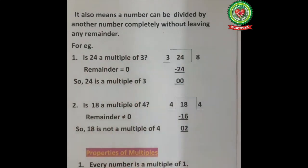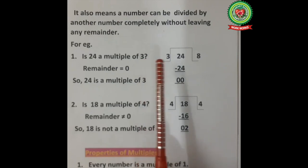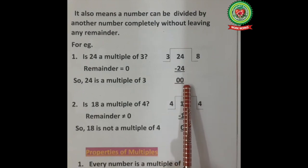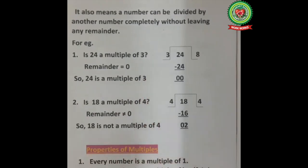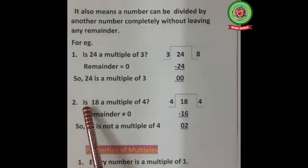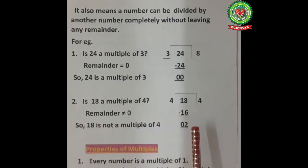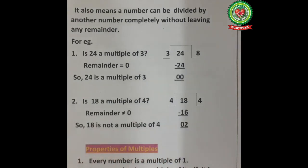It also means a number can be divided by another number completely without leaving any remainder — the remainder should be 0. For example, is 24 a multiple of 3? We divide: 3 eights are 24, remainder is 0, so 24 is a multiple of 3. Is 18 a multiple of 4? 4 fours are 16, remainder 2, remainder not equal to 0, so 18 is not a multiple of 4.